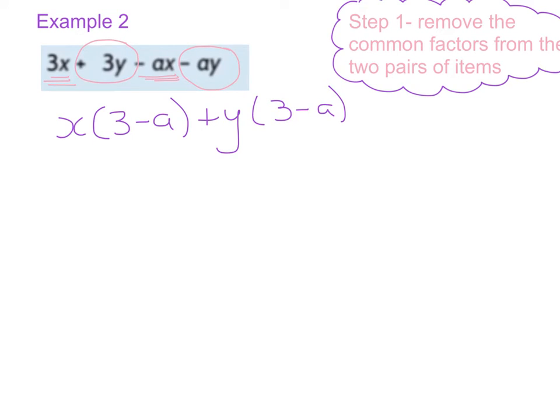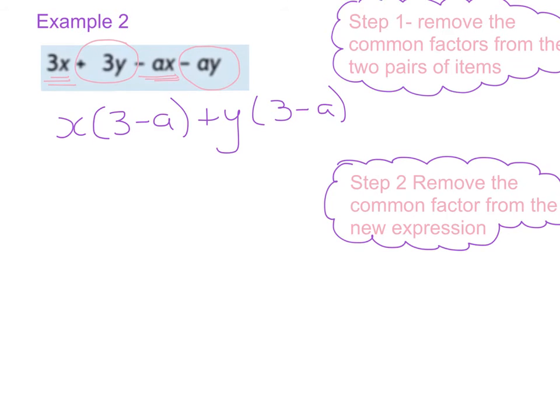And I can now move on to step two which is to remove the common factors from the new expression. So obviously if I have a look at this expression these are common so the common factor is 3 minus a. And also I'm saying well x is common and y is common so that is my second bracket x plus y.